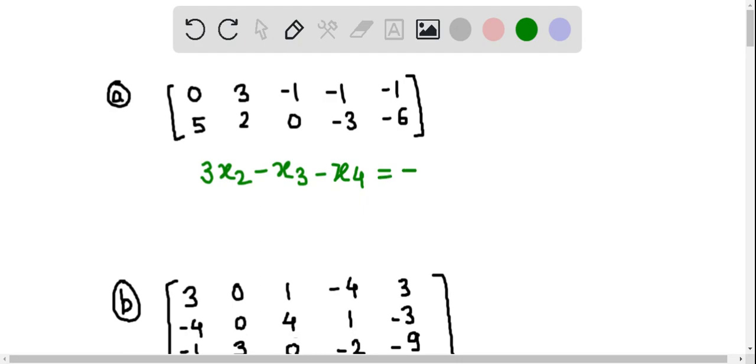From the second row of the augmented matrix, we can write the second linear equation as 5x1 plus 2x2 minus 3x4 is equal to minus 6.